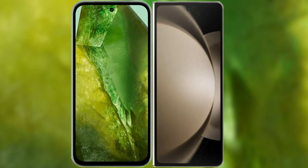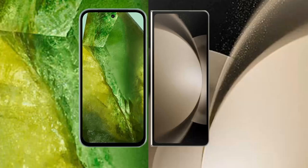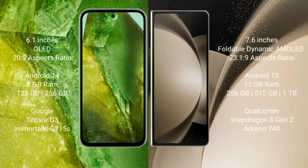I will compare the new Google Pixel 8a with Samsung Galaxy Z Fold 5. Google Pixel 8a comes with a 6.1-inch OLED display and a 2520x1080 resolution. Samsung Galaxy Z Fold 5 comes with a 7.6-inch foldable dynamic AMOLED display and a 2316x904 resolution.